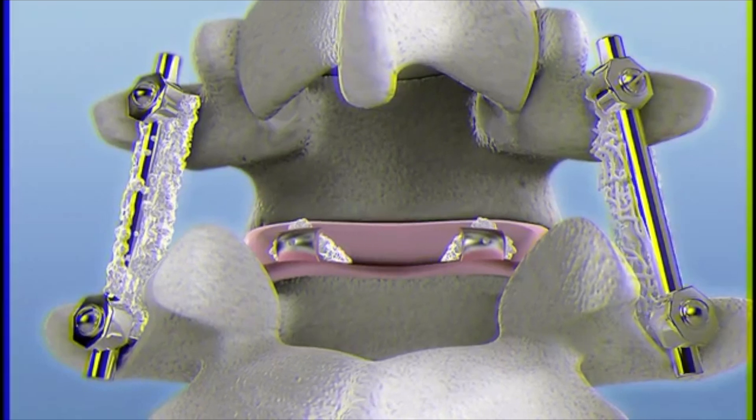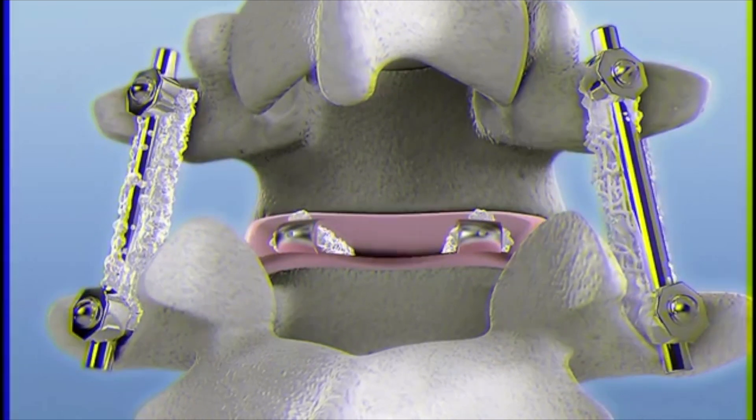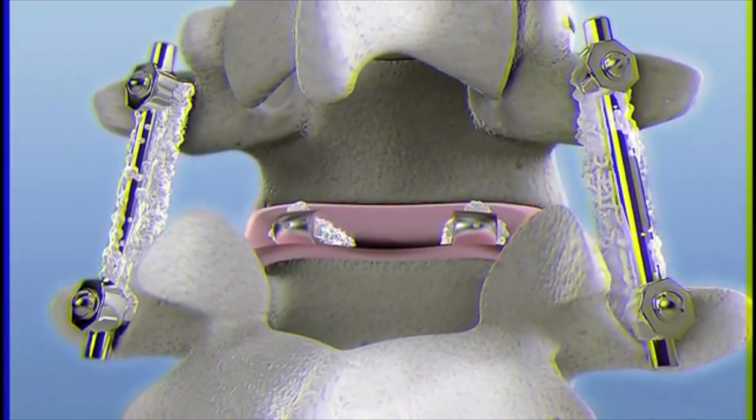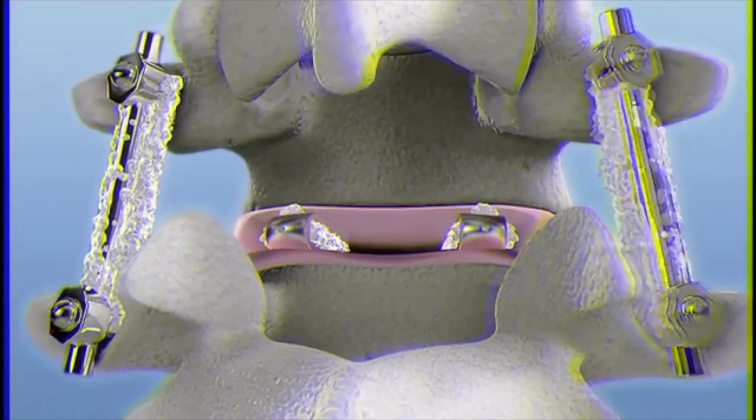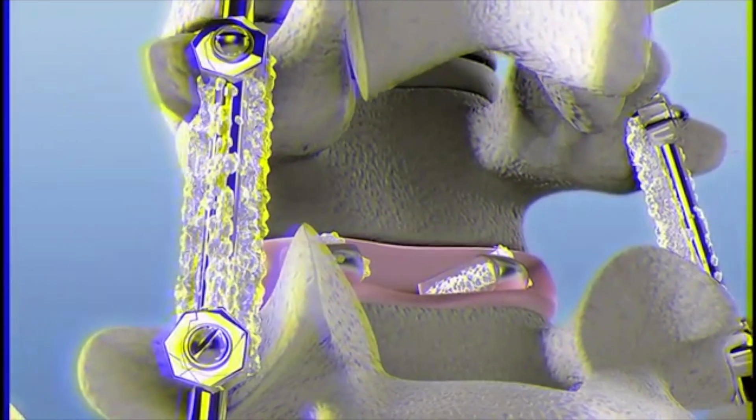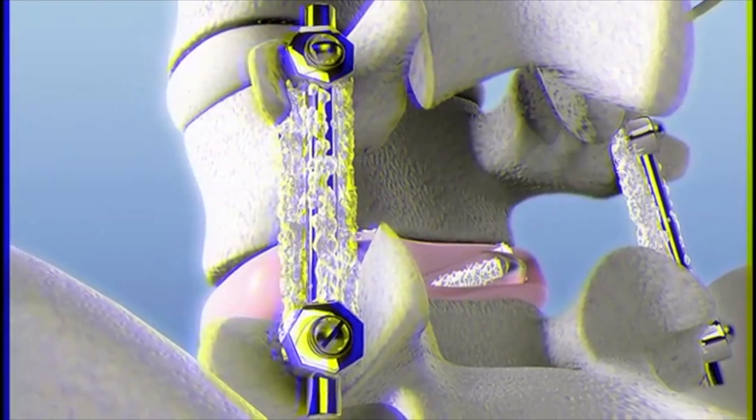In traditional synthetic bone graft substitutes, bone growth proceeds inwards from the edge of the host bone towards the center of the defect. In contrast, Inductograph promotes bone growth throughout the graft due to its osteoinductive properties.